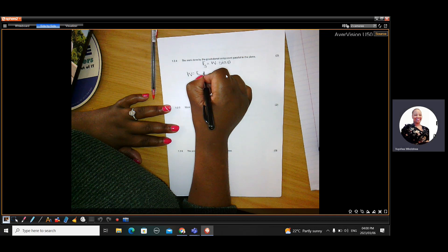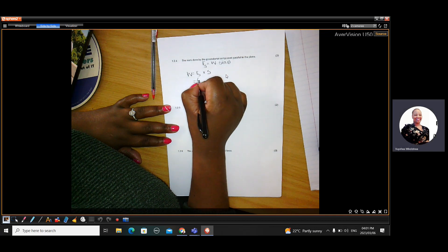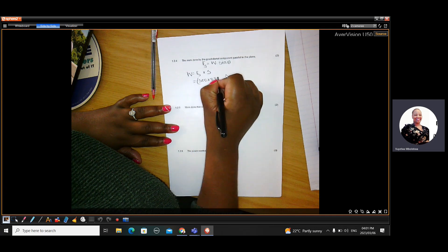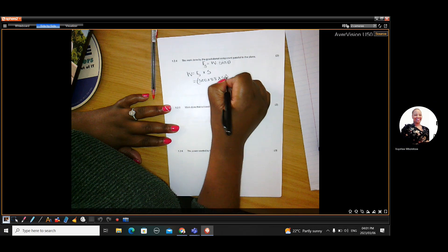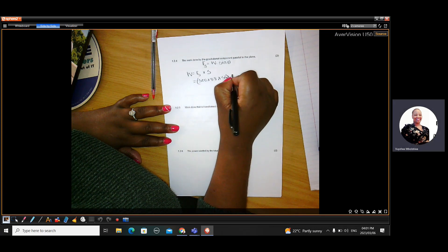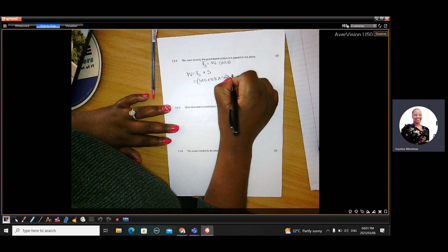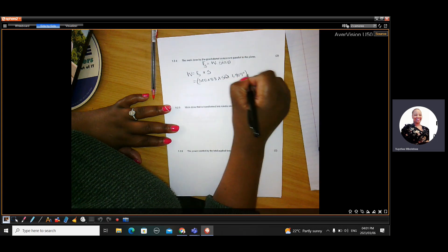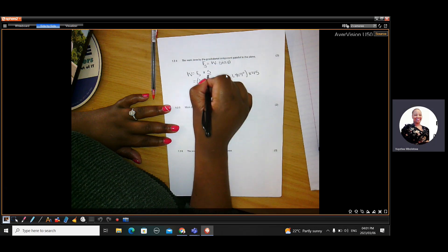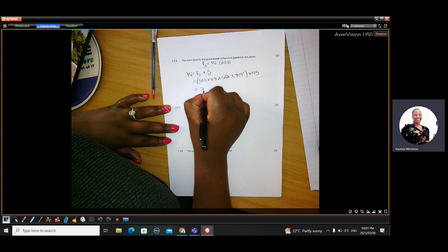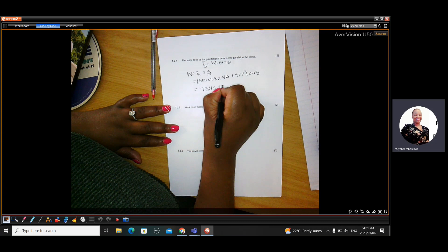So the FS is W. In this case, W is 500 times 9.8 times by sine, that angle that we calculated that side, 1.909 degrees. This whole thing multiplied by the distance of 45 meters. So this gave us 7,345.334 joules.